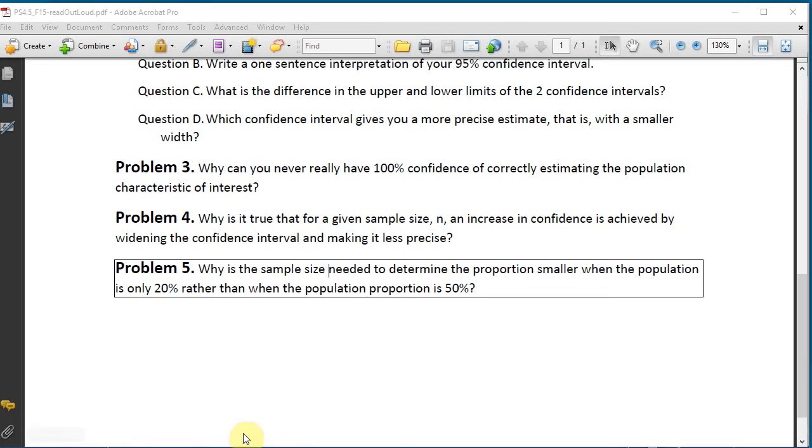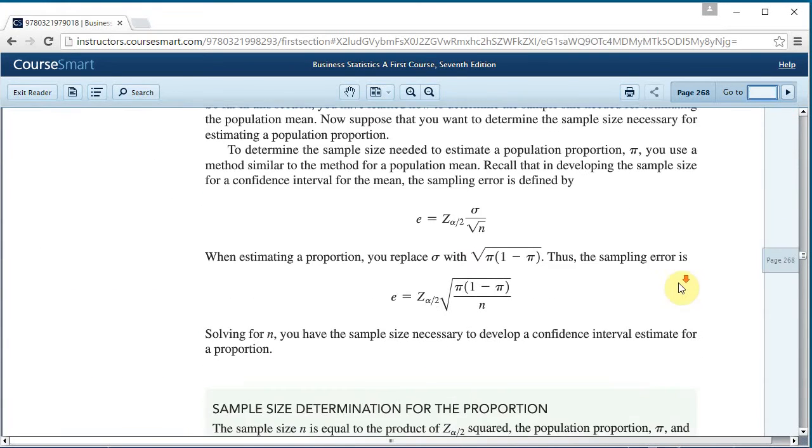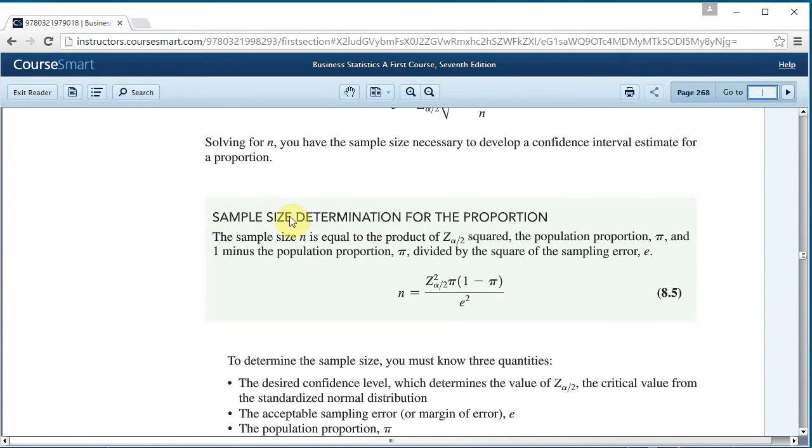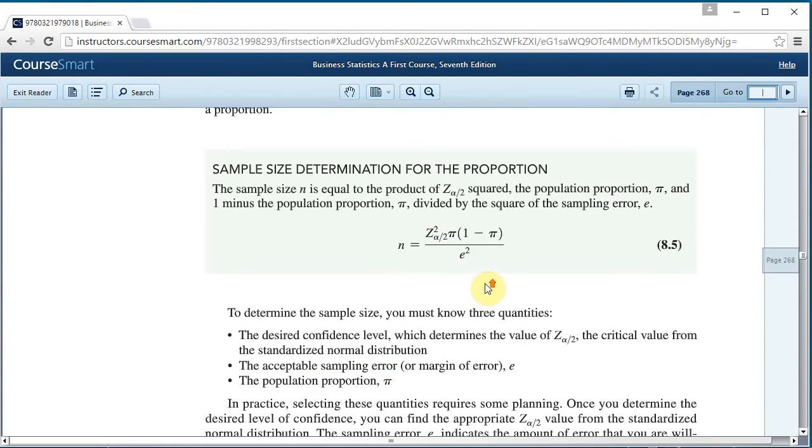Okay. For this problem, it's helpful to go back to the textbook. Let's look on page 268. We see we're trying to determine the appropriate sample size for a proportion. This is the equation here to determine n, the sample size. We have Z here, and E, which is the acceptable sampling error.